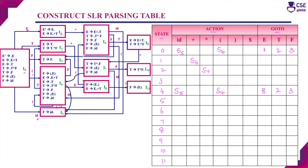State I6 transitions: with non-terminal T goes to I9 — enter 9 in go-to; with non-terminal F goes to I3 — enter 3 in go-to. For terminals: with open bracket goes to I4, enter S4; with ID goes to I5, enter S5. I6 state is now complete.